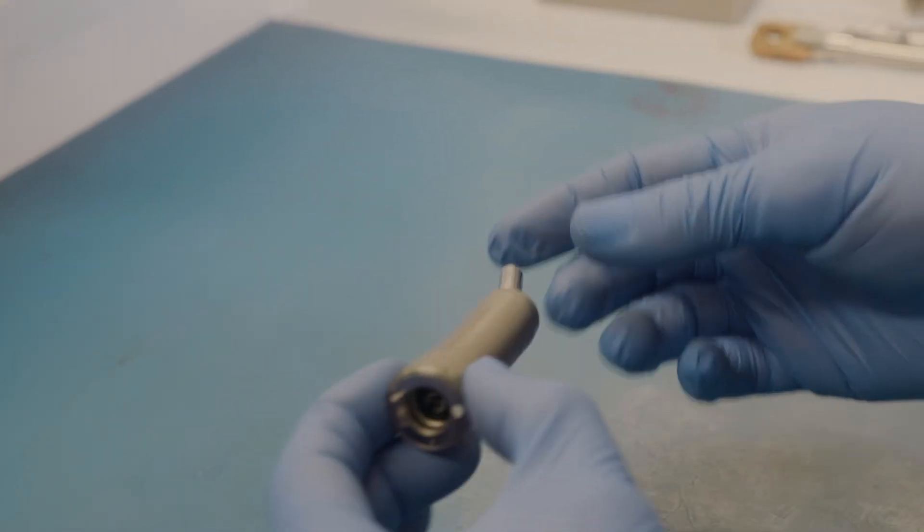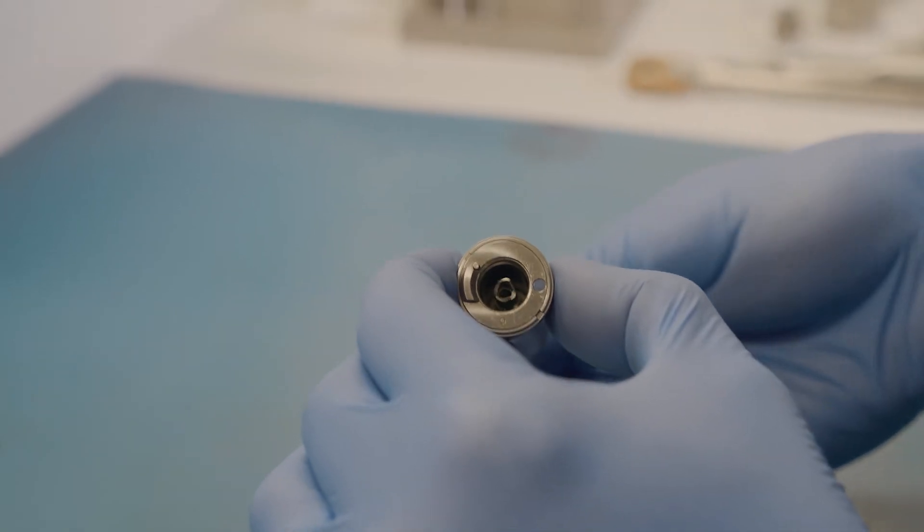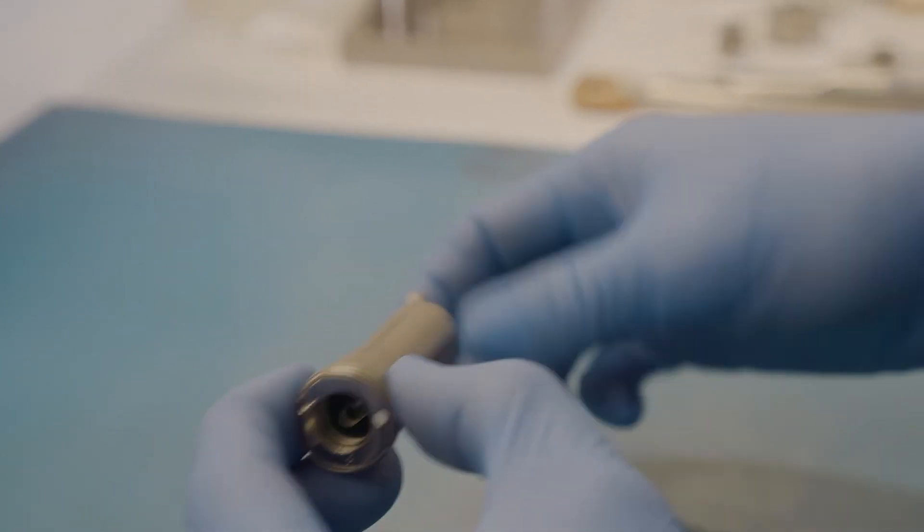Insert the drive shaft into the shank. Turn the gear at the end of the drive shaft to confirm that they are engaged.